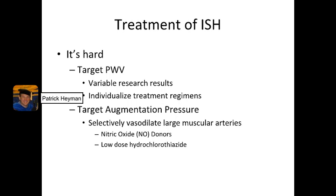As far as treatment of isolated systolic hypertension goes, the number one rule is: it's difficult. Almost all of the therapies that lower blood pressure are going to lower diastolic more than they lower systolic, which is not exactly what we're going for. There are two basic ways to approach lowering isolated systolic hypertension. The first is to target pulse wave velocity. There are variable research results — some trials show very good results for a particular treatment, others show very poor. The rule is to individualize treatment regimens, don't be afraid to try different agents at typically low doses. You're not trying to lower blood pressure per se — you're trying to lower pulse wave velocity.